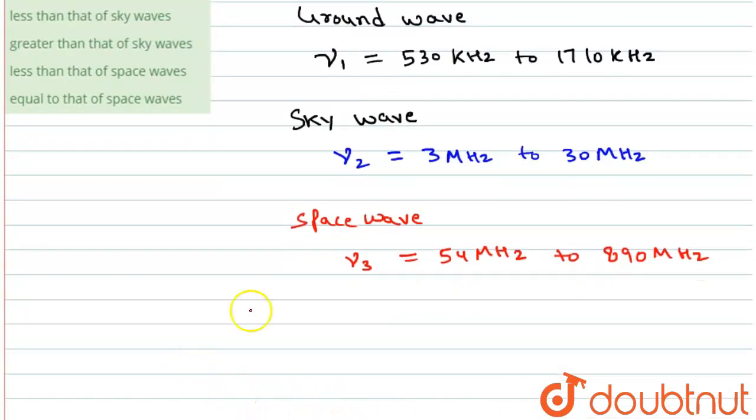It is clear that frequency nu3 is greater than frequency nu2 is greater than nu1. And as we know that the wavelength is inversely proportional to frequency.